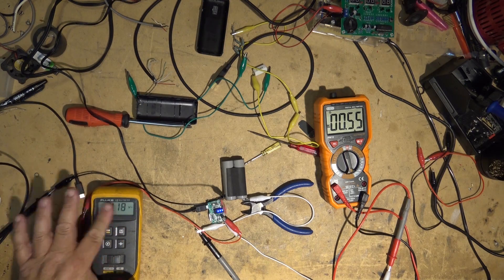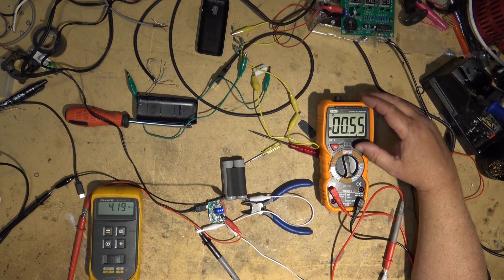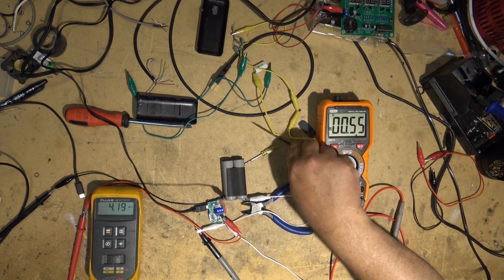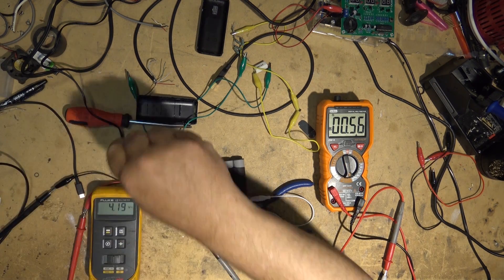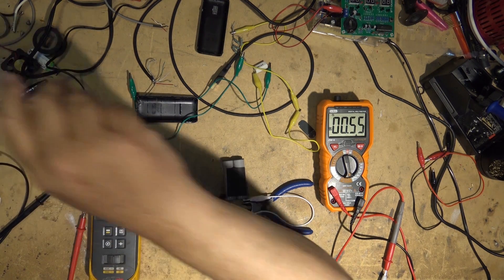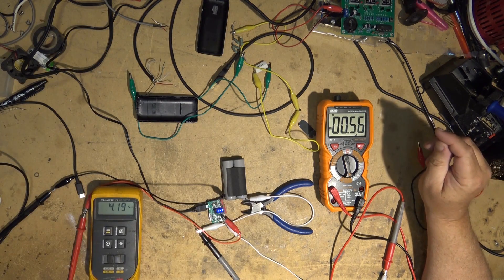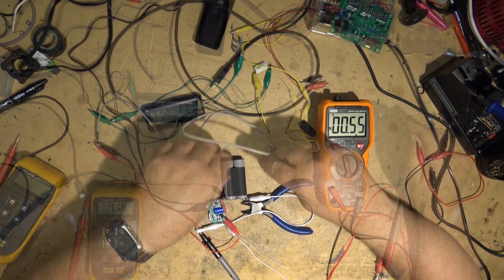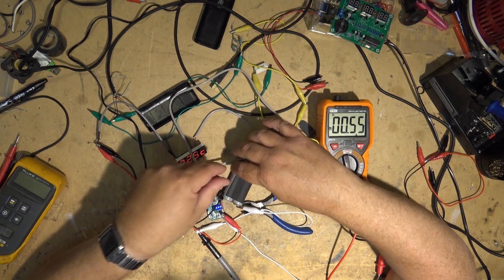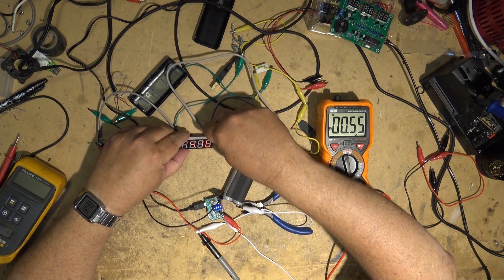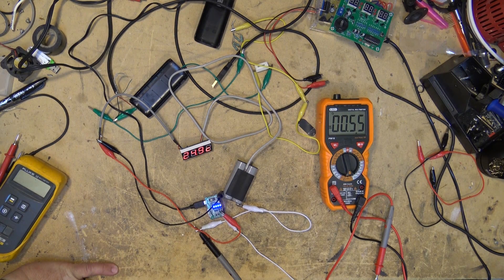We're charging at 4.18 volts, charging at looks like half an amp, just over half an amp, 550 milliamps. The only thing left to connect is the temperature monitor. I'll just slide the probe in here between the cells and that way we can monitor the cell temperature. We're going to let this charge up and see how long it takes to charge and monitor the cell temperature.